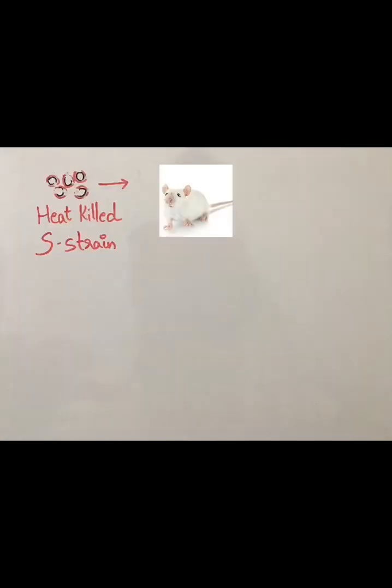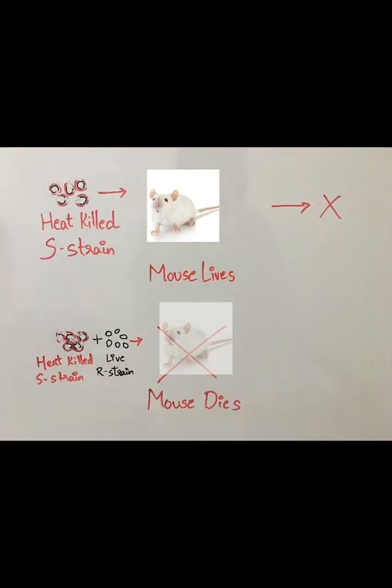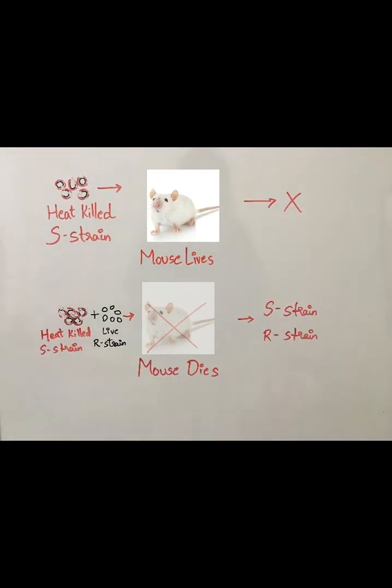When he injected heat-killed S-strain cells, the mouse survived. He combined live R-cells along with heat-killed S-strain and injected it to the mouse. The mouse died.